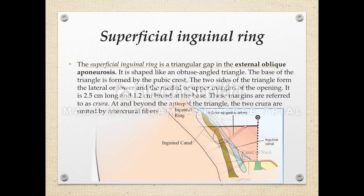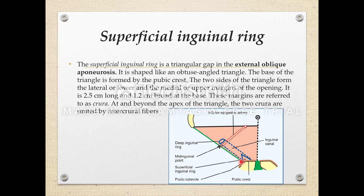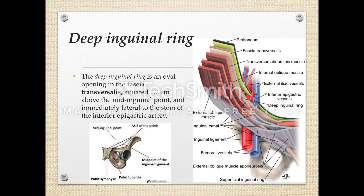The superficial inguinal ring is a triangular gap in the external oblique aponeurosis. The deep inguinal ring was oval and in the fascia transversalis, but the superficial inguinal ring is formed by the external oblique aponeurosis. It is named 'superficial' because it is nearer to the skin, while the deep inguinal ring is farther from the skin — hence 'deep'.